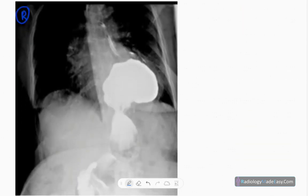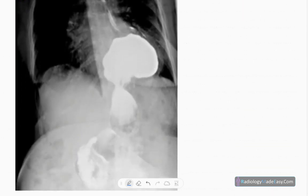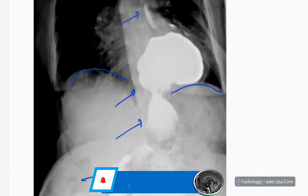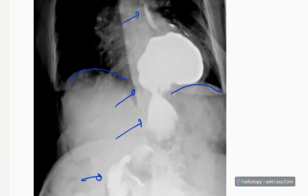This is the anterior-posterior spot radiograph of the barium swallow series. You can see a normal contrast column here. You can see the diaphragm here, so there's a structure above the diaphragm level or esophageal hiatus.